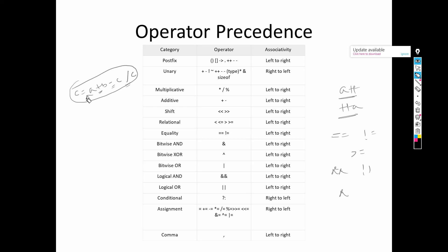The question is which operation is to be completed first. That problem is solved by the concept of precedence — precedence means priority. Looking at the list of different operators: postfix, unary, multiplicative, additive, shift, relational — these are different operators and the priority moves from upper to lower, meaning postfix has the highest priority and the assignment operator has the lowest priority.